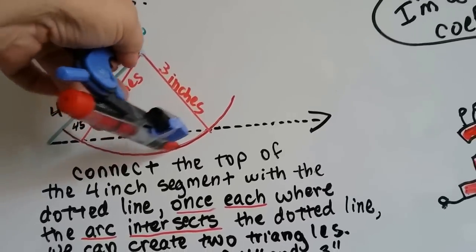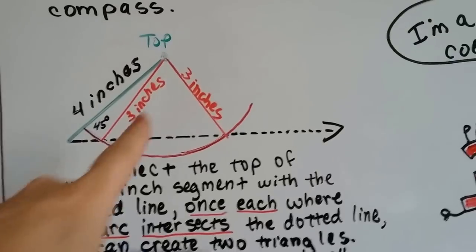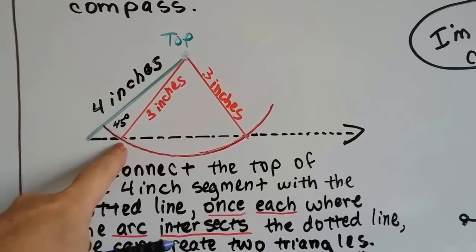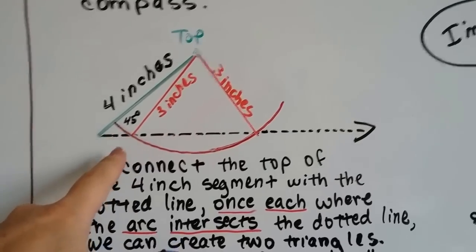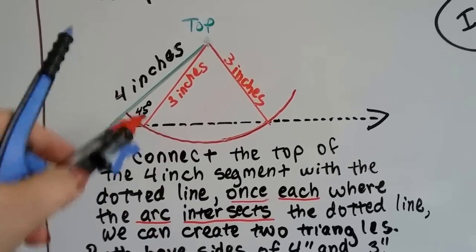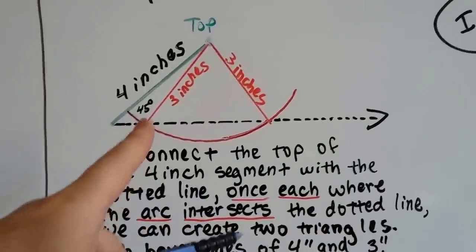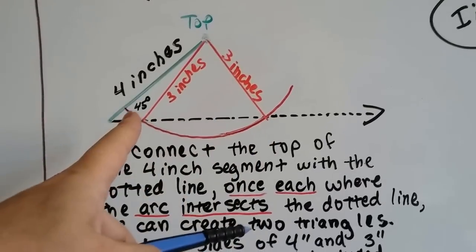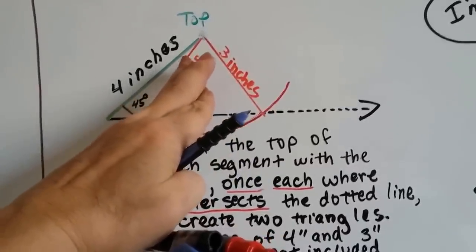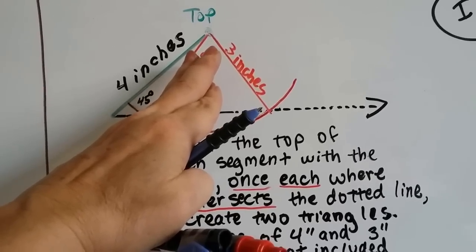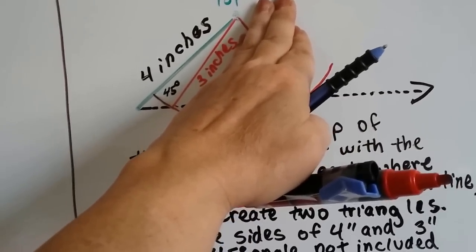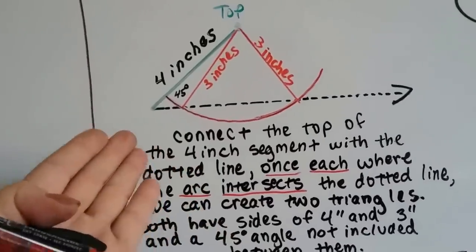We put the compass point at the top and draw an arc across the dotted line — making a swoop that crosses the dotted line once and then a second time. If we connect the top to the first point where the arc crosses the dotted line, we make a triangle with a four-inch side, a three-inch side, and a 45-degree angle. But connecting to the second crossing point also gives a triangle with a four-inch side, a three-inch side, and a 45-degree angle.